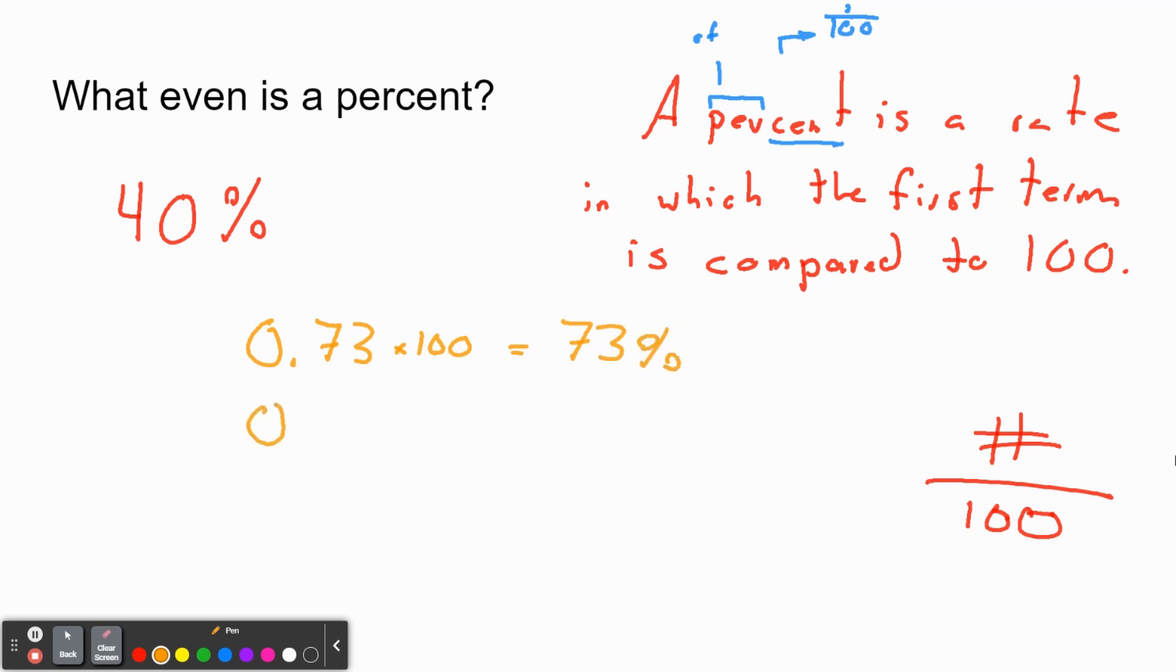You can do this with more complicated decimals as well. Let's say we have something like this. We can again multiply it by 100 and we'll get 73.45%. Nothing too bad. All it's doing is telling you part of some whole amount. Sometimes you see percentages over 100, but usually they're going to be between 0 and 100.